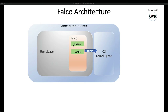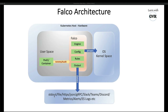Any software you install on a Linux machine requires configuration. Falco also has specifically defined rules. If a pod or container is doing some malicious activities, Falco rules will parse those activities and generate output to standard output, file output, HTTP/JSON, gRPC, Slack, Teams, Discord, Matrix, Elasticsearch, or anywhere — many integrations are possible.